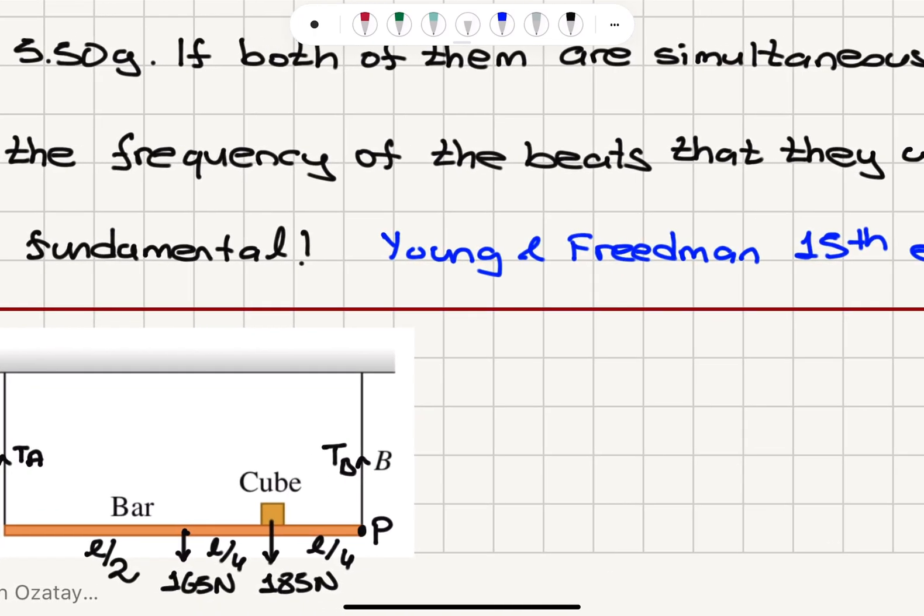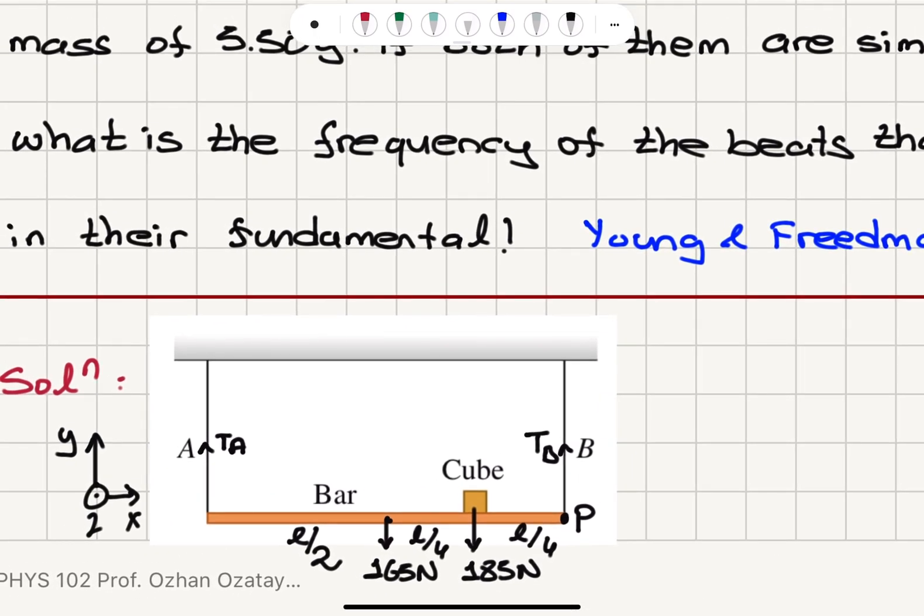So let's start with identifying all the forces acting on this system. We will have obviously a tension on wire A, a tension on wire B. This is a uniform bar, so center of mass is in the middle.